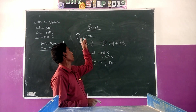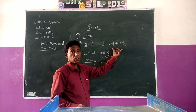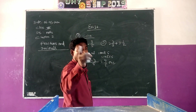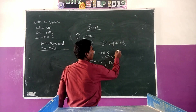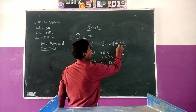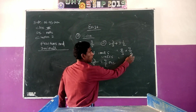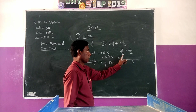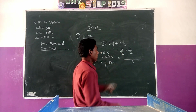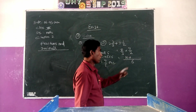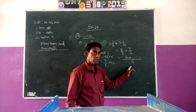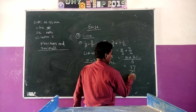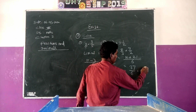Question 1: 2 and 2 by 3 plus 3 and 1 by 2. It is a mixed fraction addition. We convert it to improper fractions: 8 by 3 plus 7 by 2. The LCM of 3 and 2 is 6. We get 16 by 6 plus 21 by 6, which equals 37 by 6, which can be written as 6 and 1 by 6.